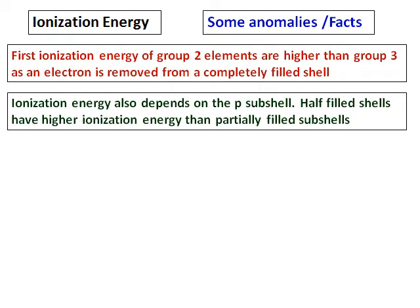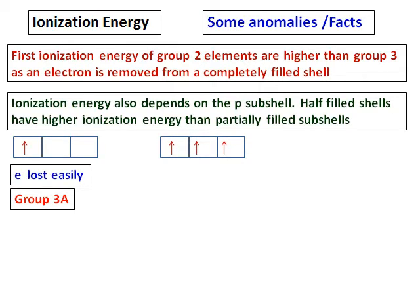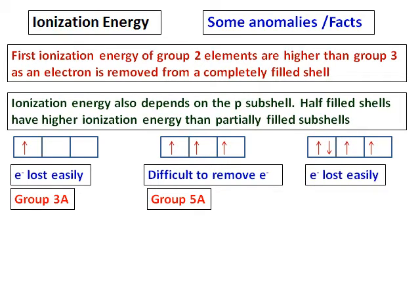Ionization energy also depends on the P subshell. Half-filled shells have higher ionization energy than partially filled shells. For example, group 3A has only one P electron (NS² P¹), so that electron can be lost easily. However, group 5A, which has three P electrons — a half-filled subshell — it is difficult to remove an electron, and hence the ionization energy is higher. Similarly, group 6A, with four electrons in a partially filled subshell, has lower ionization energy and the electron is lost more easily.